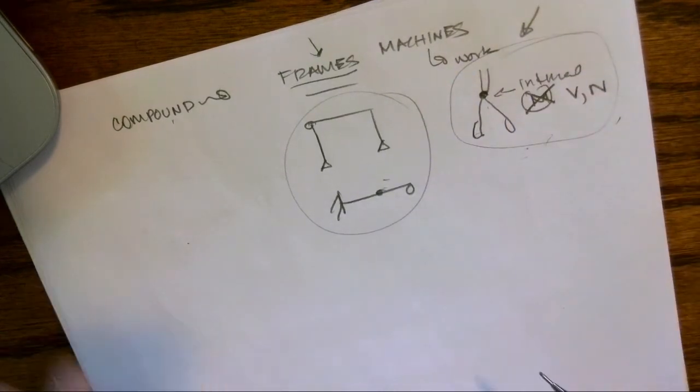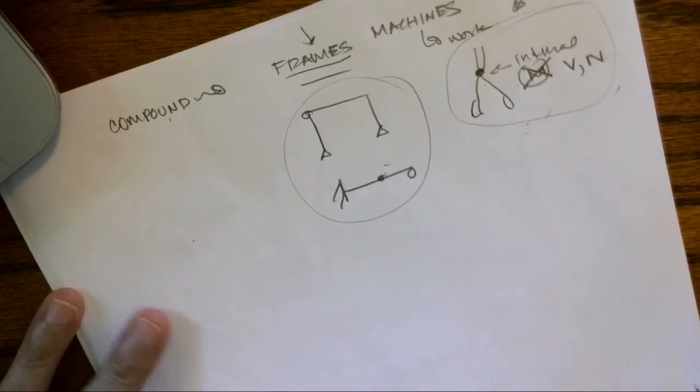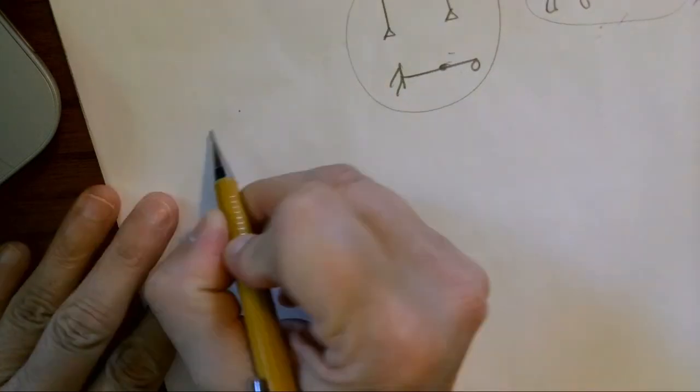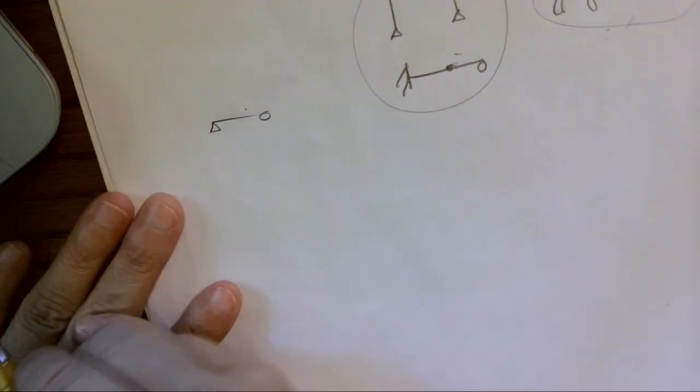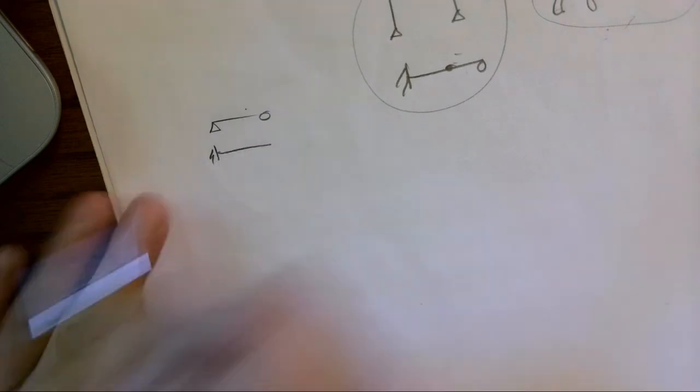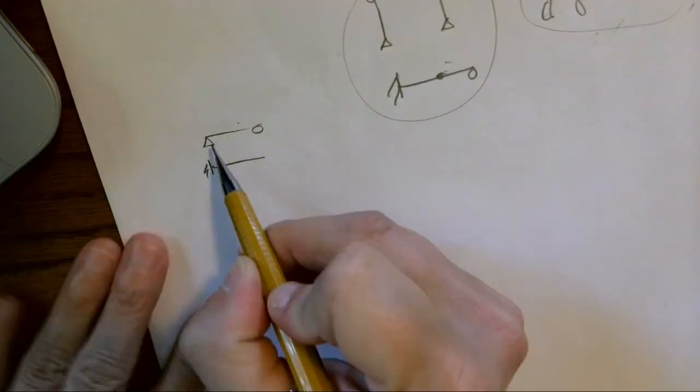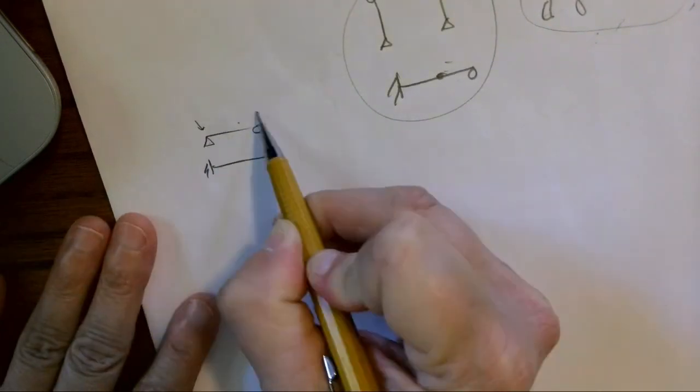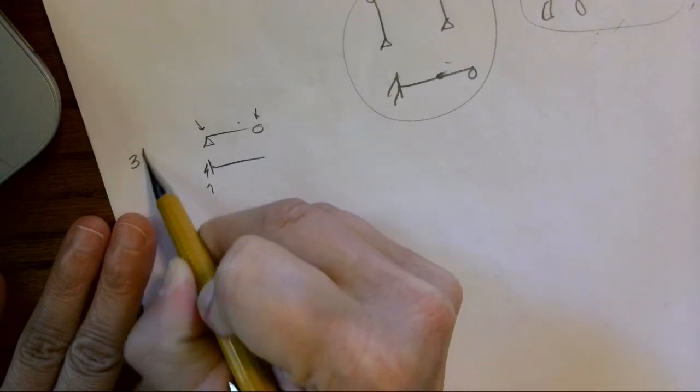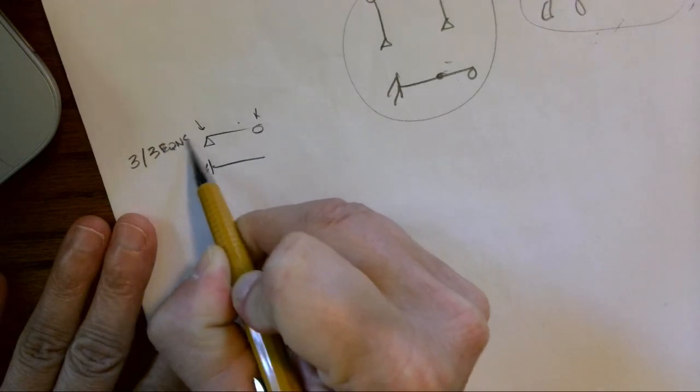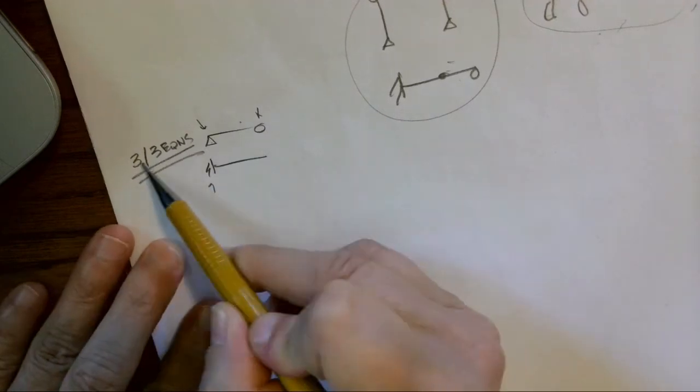So we talked about simply supported—we had a pin and roller—and we talked about a simple fixed system. The things to note is that with each of these systems we have three unknowns and three equations of equilibrium. It has to have three unknowns or it's not stable.